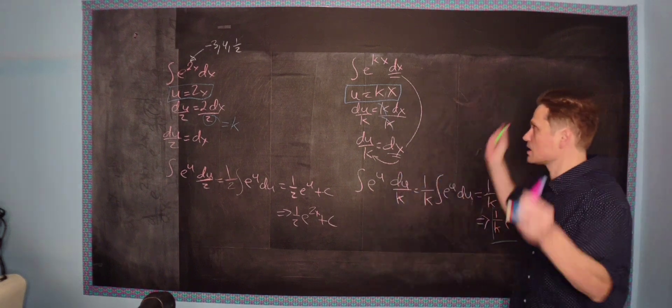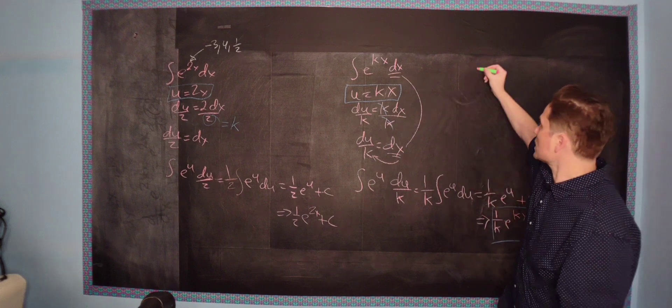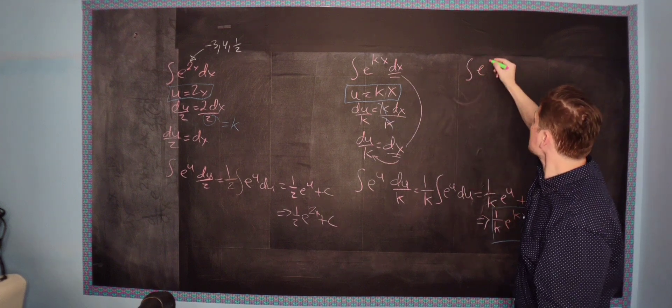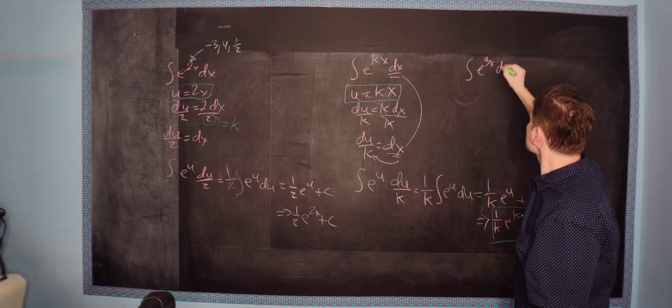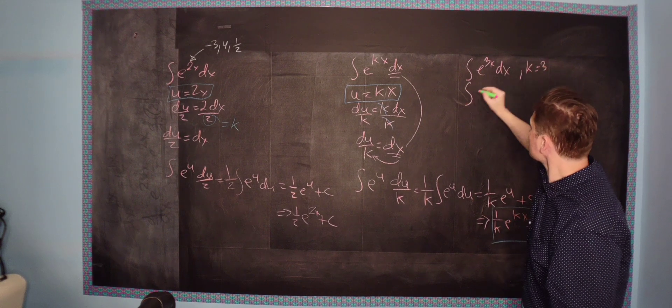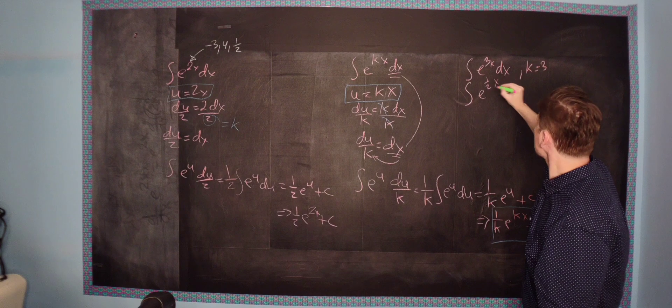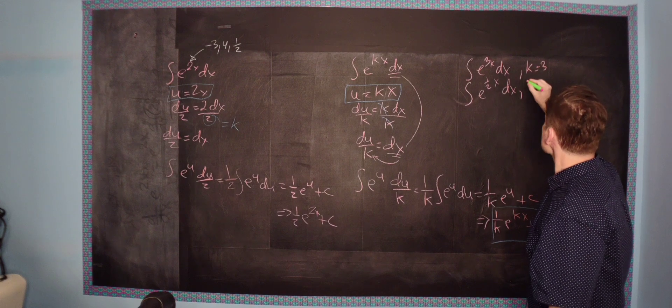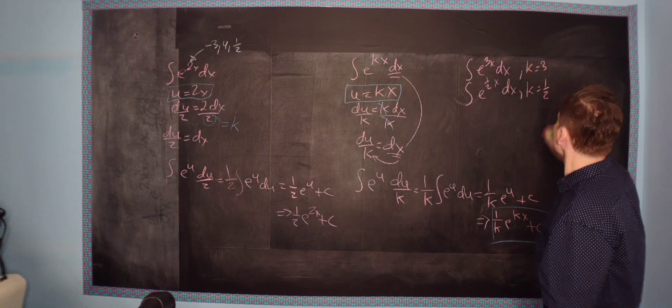So let me stress the following, then, lastly, as a last note of all of this crazy stuff, that if you had, for example, e to the 3x dx, it just happens that k is 3. Right? If you had, for example, e to the 1 half x dx, it just happens that k is equal to 1 half.